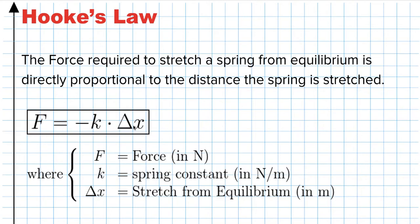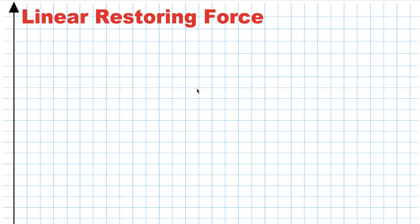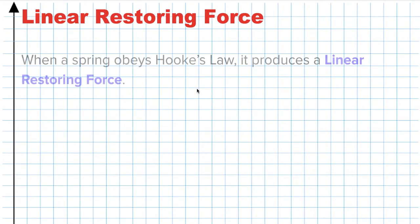If I push a spring to the left, it applies a force to the right. It opposes any displacement from equilibrium. There is a point where the spring is happy, and anytime you disturb it, it tries to exert a force to get back to that point. That is Hooke's Law, and this idea we call a linear restoring force.